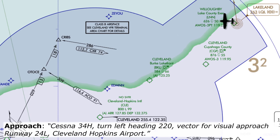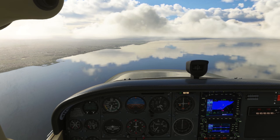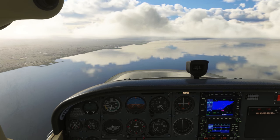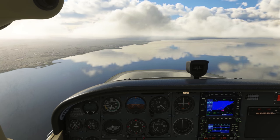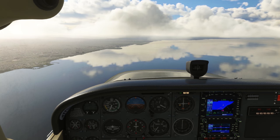Cessna 34 Hotel, turn left heading 220, vector for visual approach, runway 24 left, Cleveland Hopkins Airport. If the weather conditions at the airport are VFR — in other words ceilings are at least a thousand feet and visibility is at least three statute miles — the controller can decide to alleviate some of their workload and yours as pilot by assigning a visual approach.